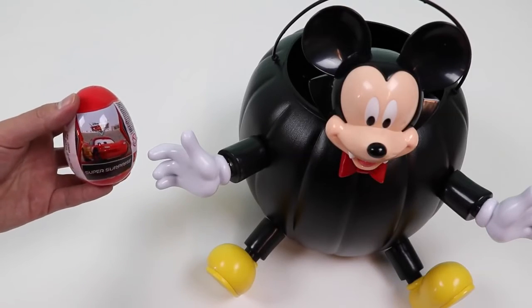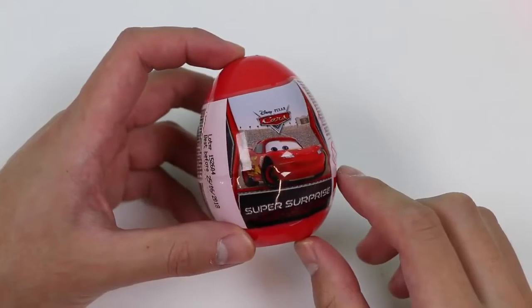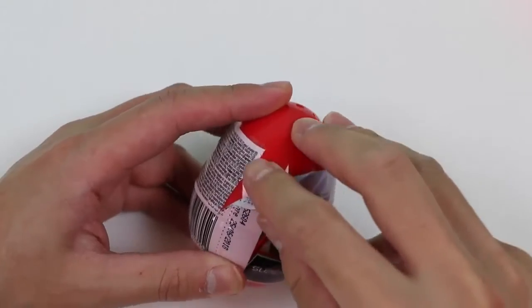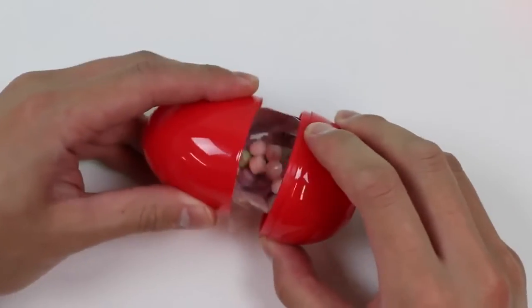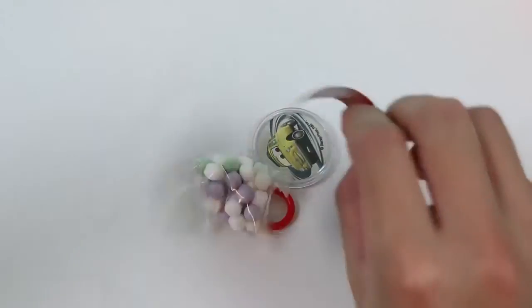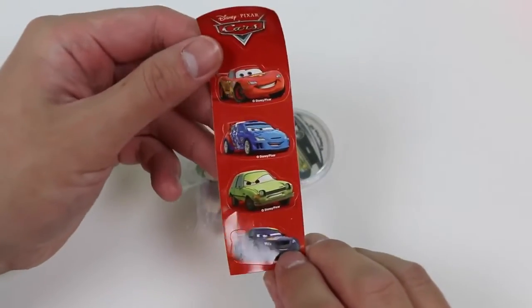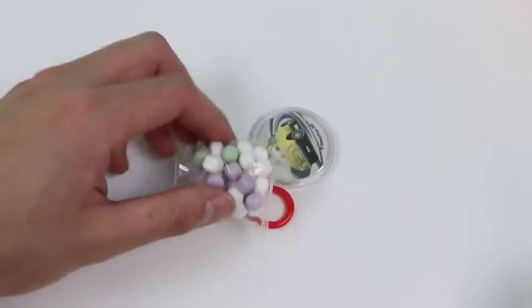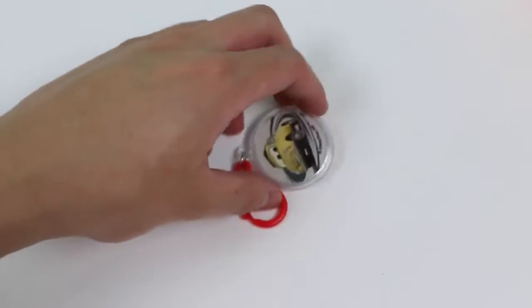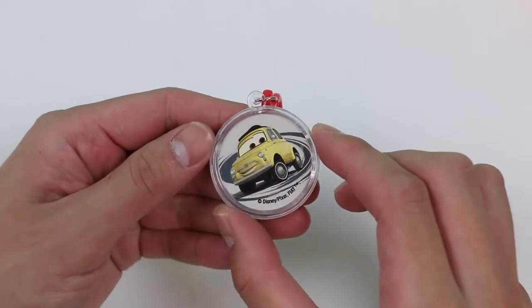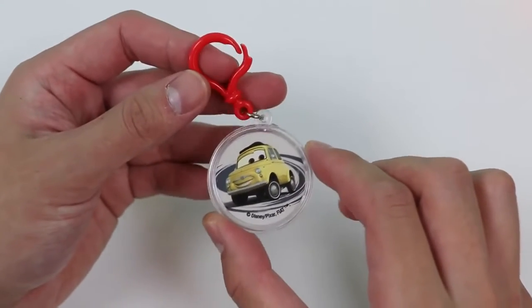Woo! Another surprise egg! Alright! Now we'll be checking out a Disney Pixar Cars one! Here are four stickers of different Cars characters! We get some more candy! And for the surprise toy we got a Disney Cars keychain! This is Luigi!